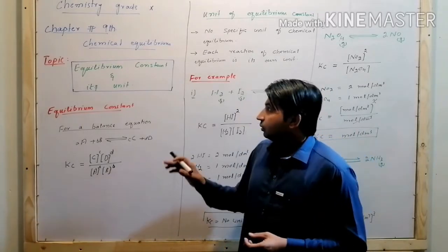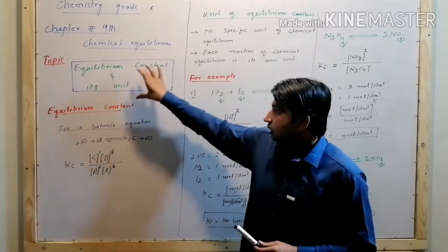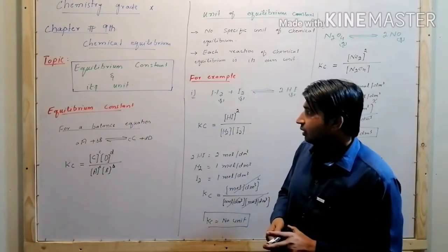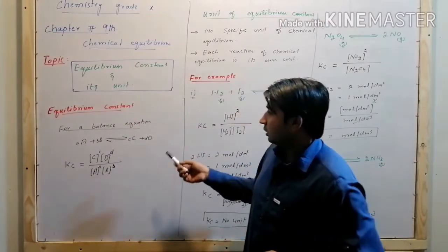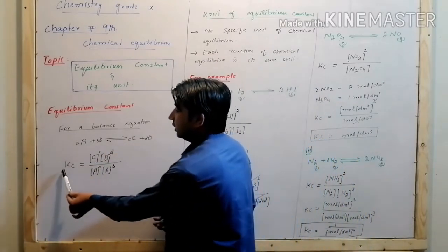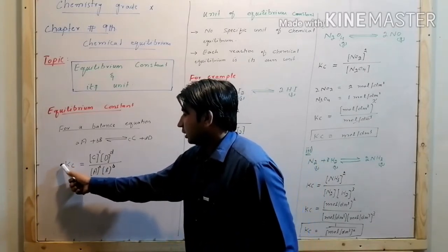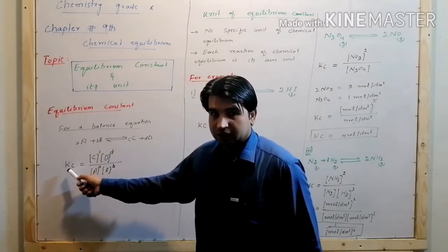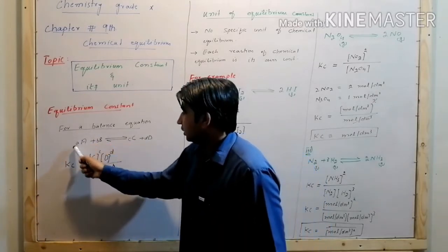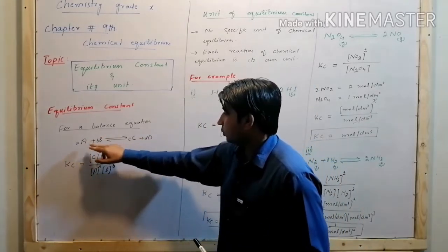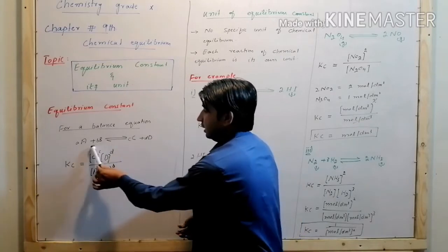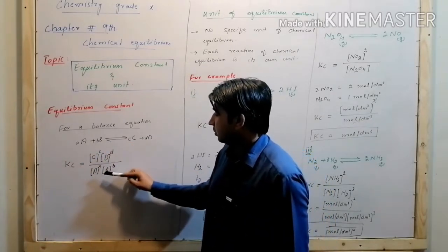The topic is the equilibrium constant and its unit. The equilibrium constant relates to chemical equilibrium. Looking at the general balance equation, Kc is derived from the general equation. Kc is equal to the product concentrations over the reactant concentrations — product in the numerator, reactant in the denominator.